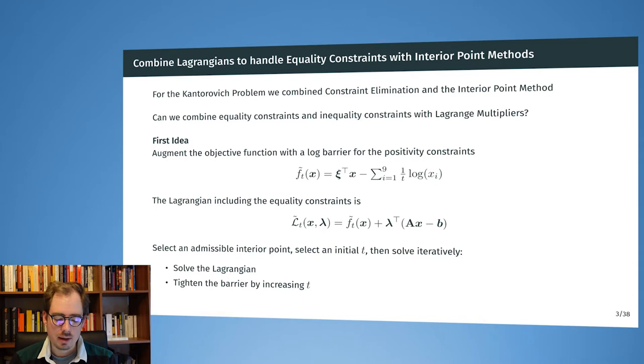And we will show them today and also show how to get around these difficulties. So initially we might think that combining the equality constraints approach of the Lagrangian with the interior point method is quite trivial. So for the Kantorovic problem we have equality and inequality constraints. So somehow we have to combine the solution methods for both. And so we might think it's rather trivial because we can just create some augmented target function that contains our original problem which was linear for the Kantorovic problem.